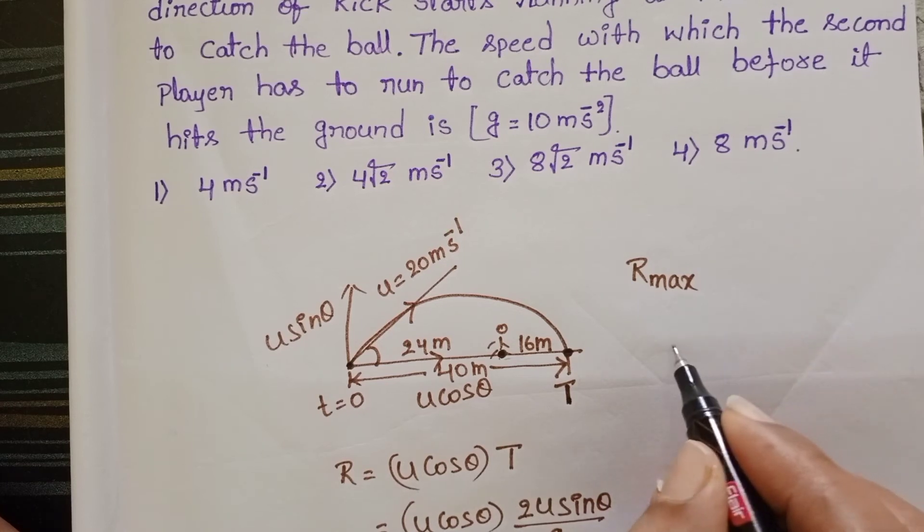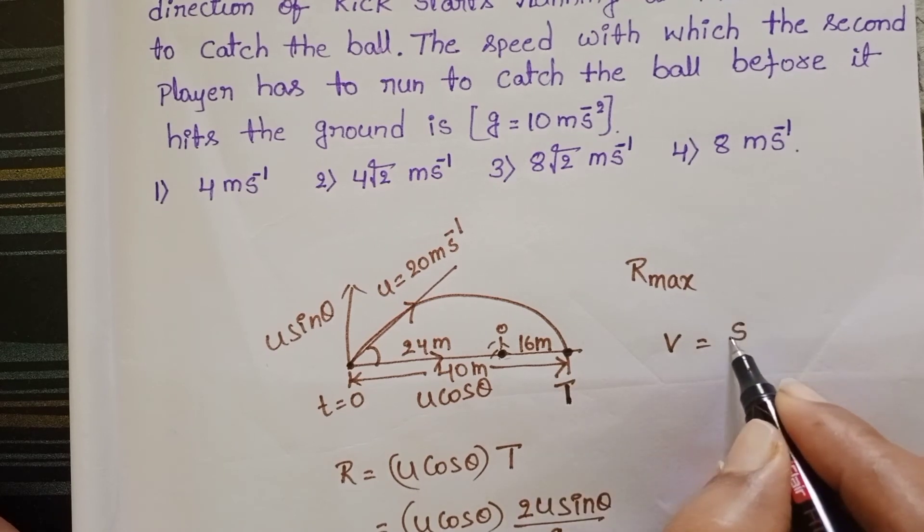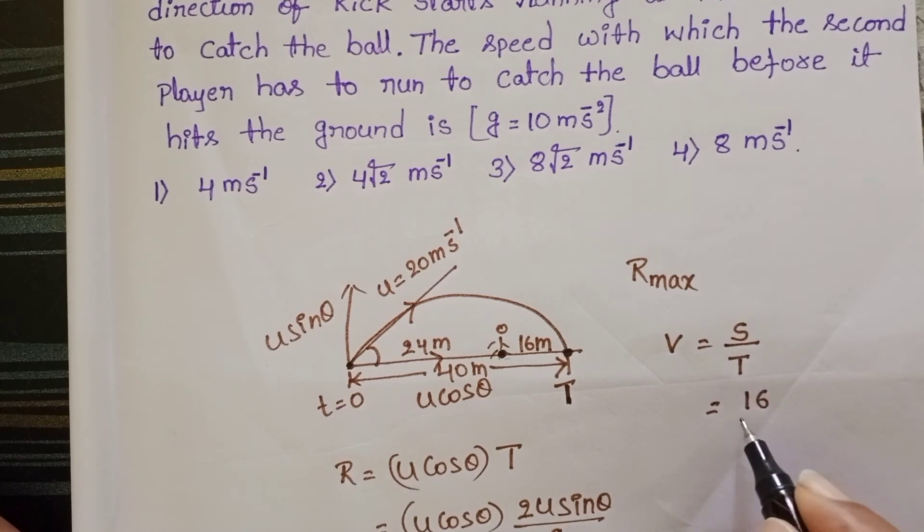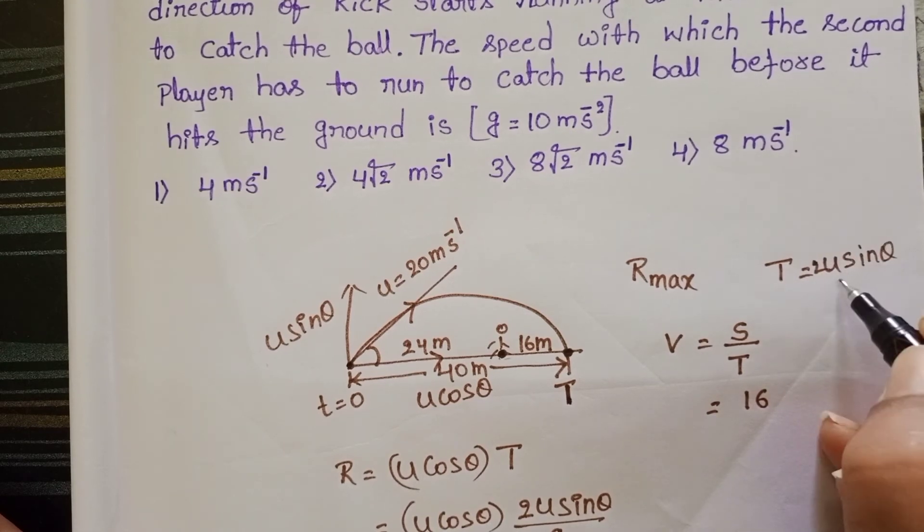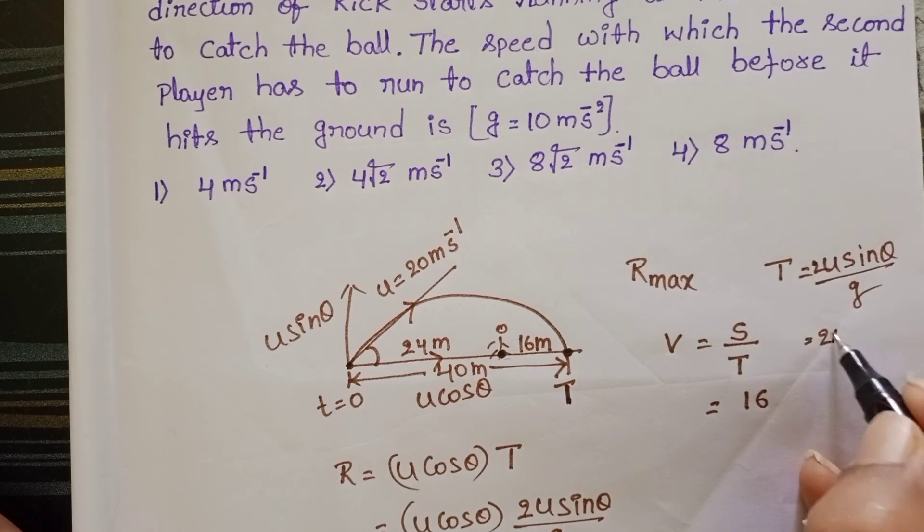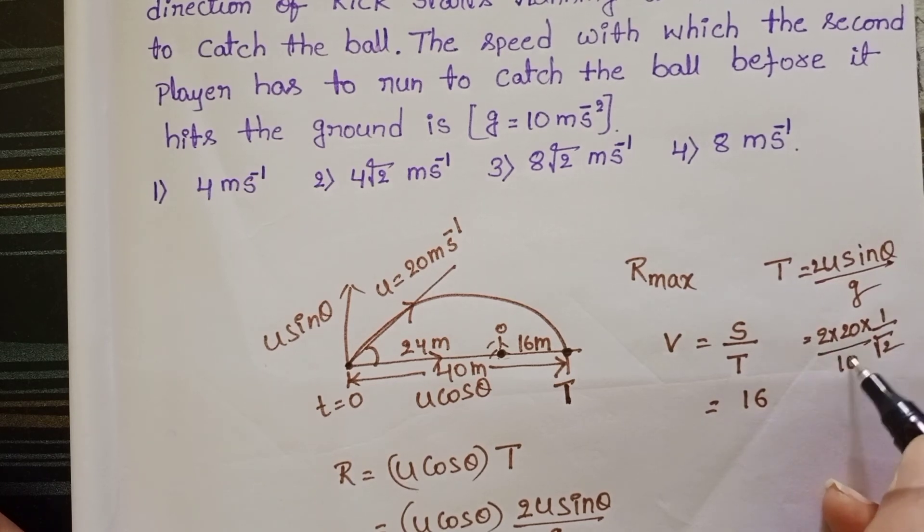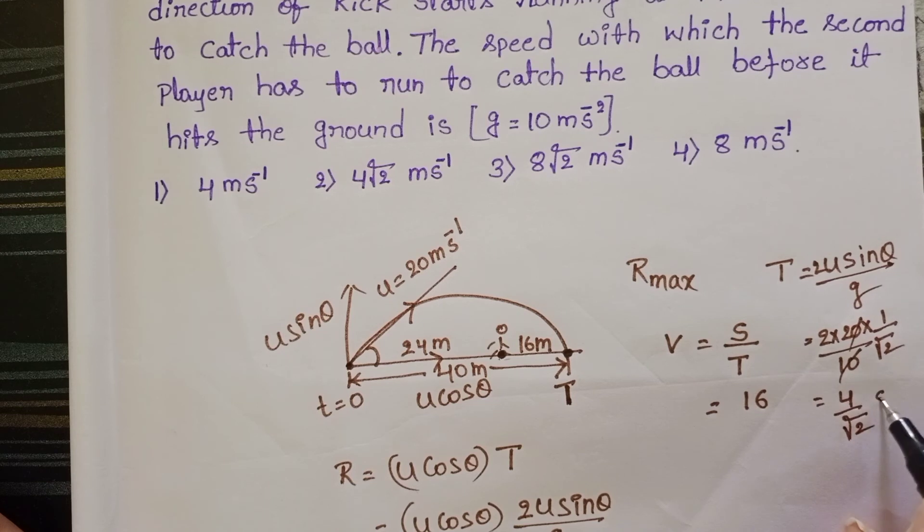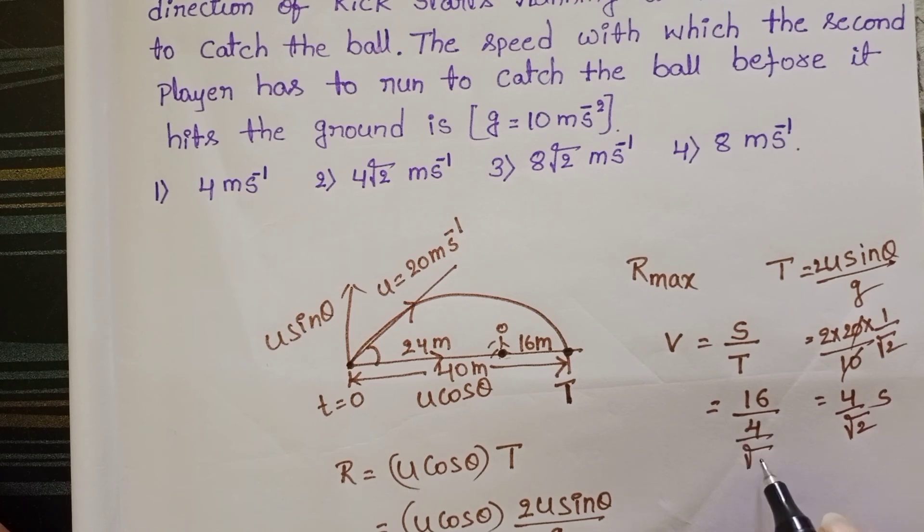And from final position to this point distance is 16 meters and time of flight. So speed of the second player is equals to distance by time of flight. Here distance is 16 meters and we know time of flight formula T is equals to 2u sin theta by g. 2 into initial velocity 20 theta is 45 degrees sine 45 degrees 1 by root 2 and g is 10. So 4 by root 2 seconds time of flight.